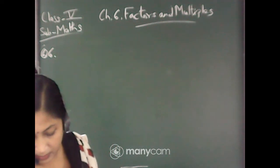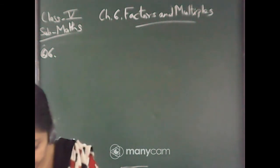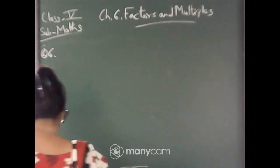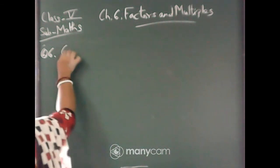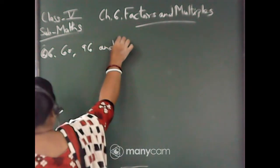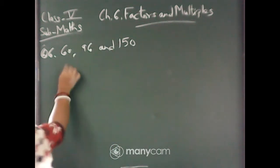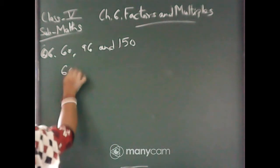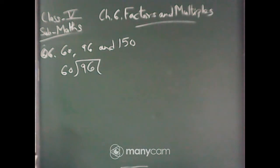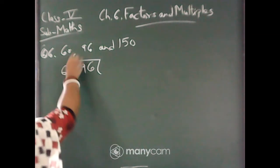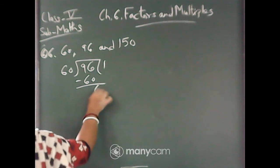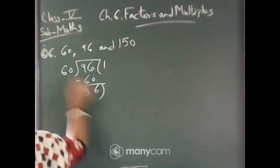Let us start question number 6. Number a, 60, 96, and 150. So let us solve 60 inside. See here, since 3 numbers are given, first two you will take and then divide. 60 outside, 96 inside. 1 times 60 is 60, 36.